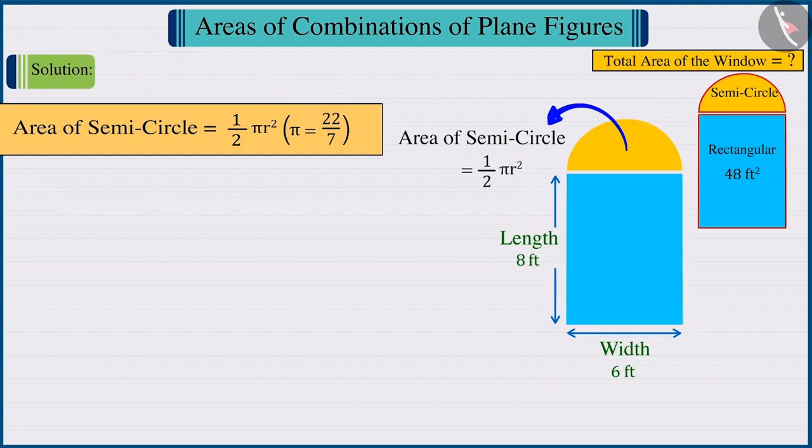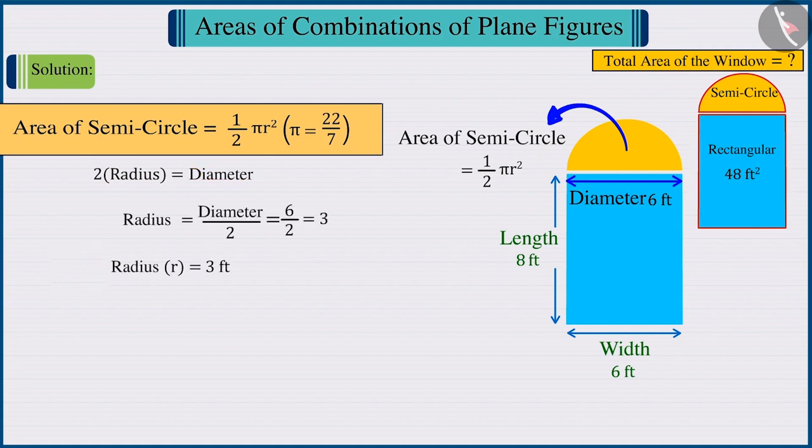Observing the shape of the window carefully, we can find that the diameter of the semicircle represents the width of the window. Since the diameter is twice the radius, we can say that the radius of the circle is 3 feet.